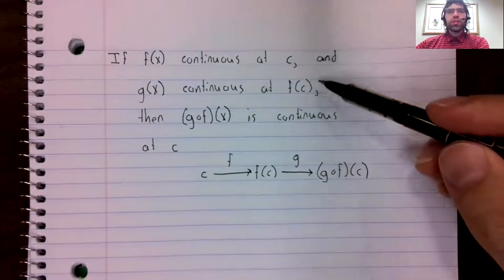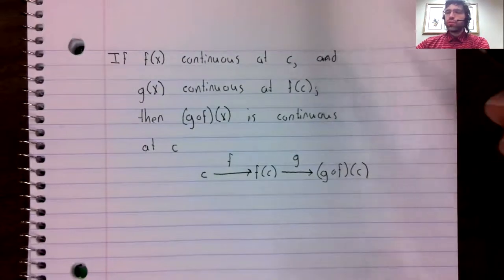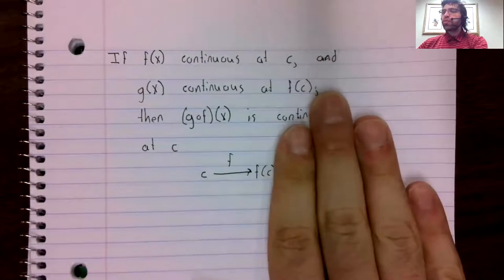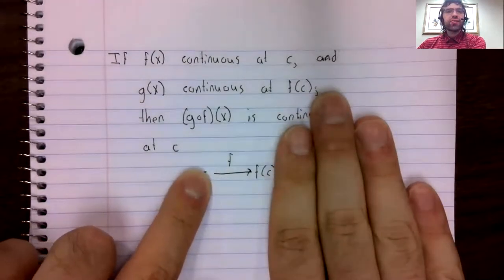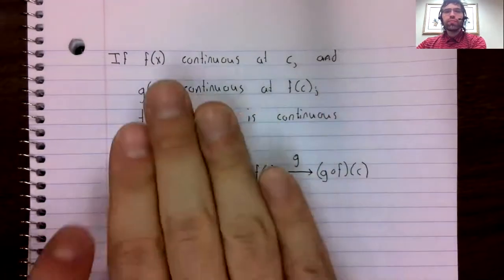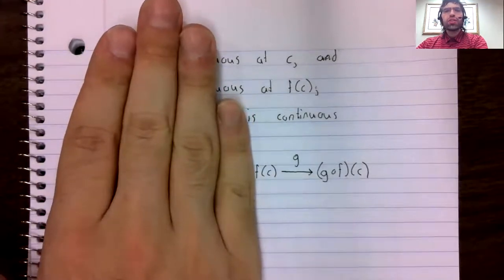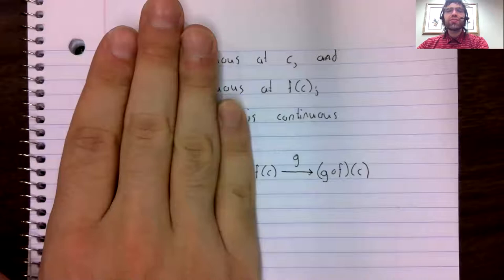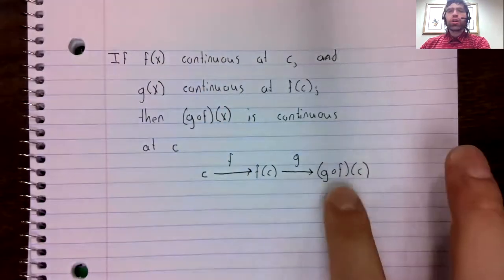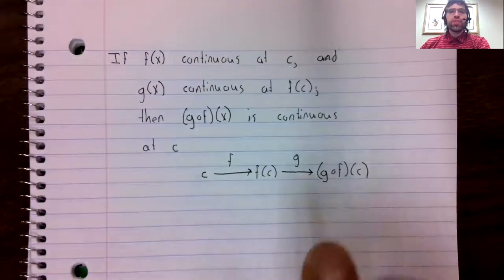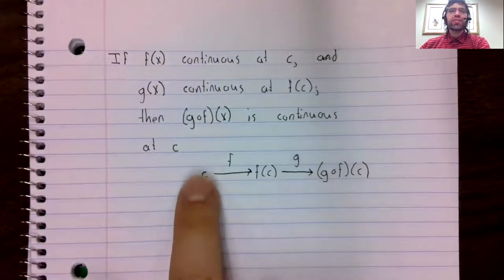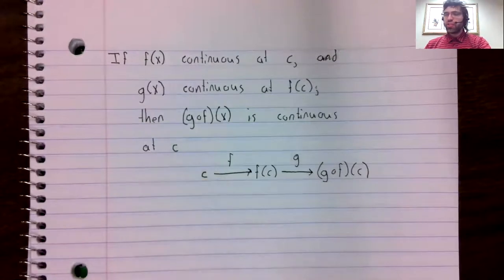So what these things are telling you is that f is continuous at its input, and g is continuous at its input. And if we have both of those conditions, then the composition is continuous at its input.